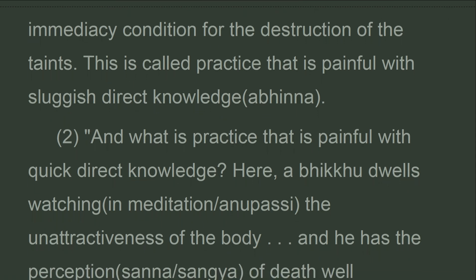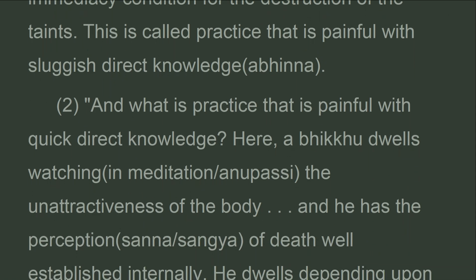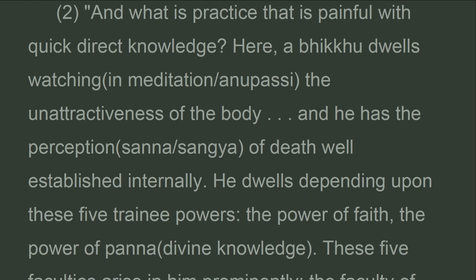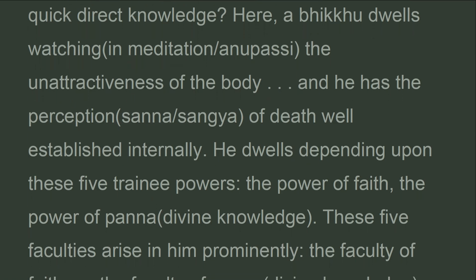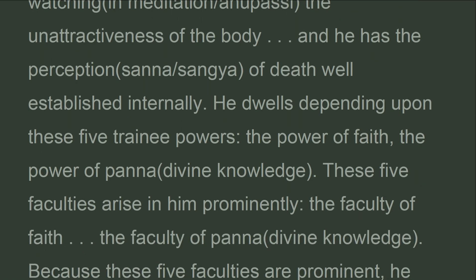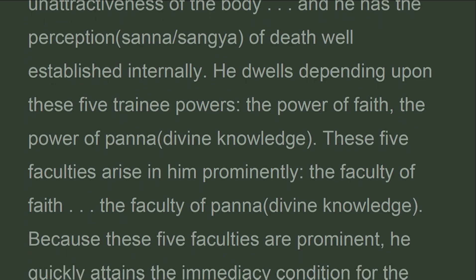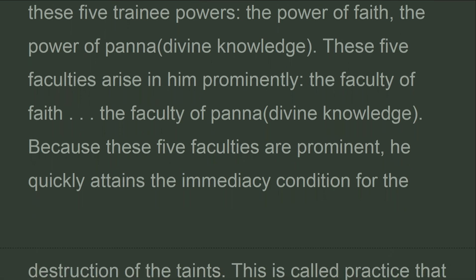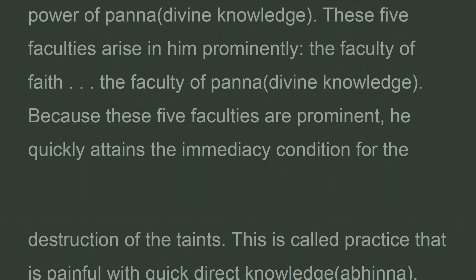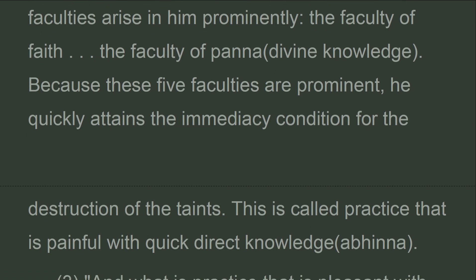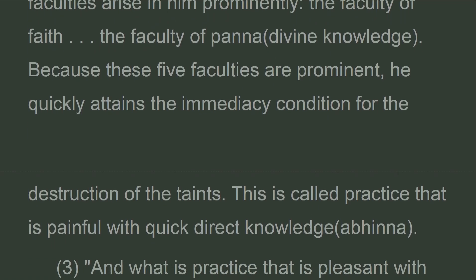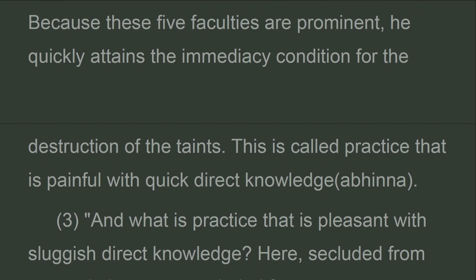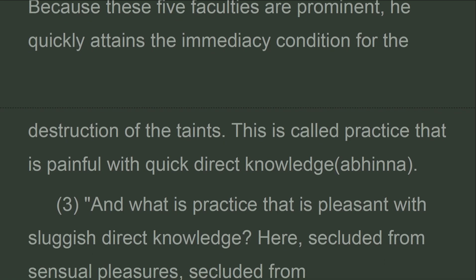And what is practice that is painful with quick direct knowledge? Here, a bhikkhu dwells watching the unattractiveness of the body and has the perception of death well established internally. He dwells depending upon these five trainee powers: faith through wisdom. These five faculties arise in him prominently: faith through wisdom. Because these five faculties are prominent, he quickly attains the immediacy condition for the destruction of the taints. This is called practice that is painful with quick direct knowledge.